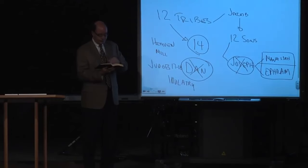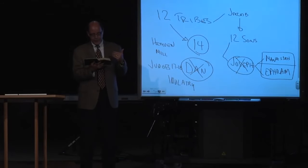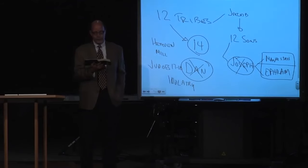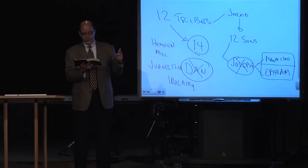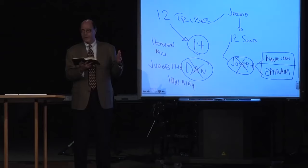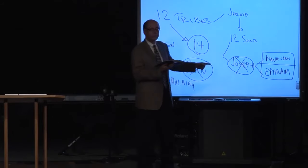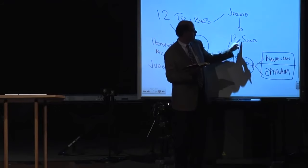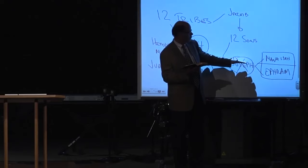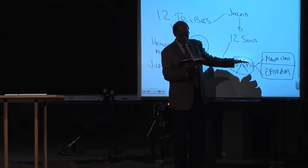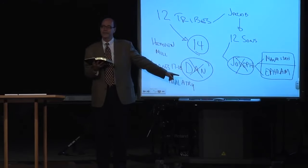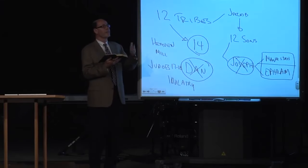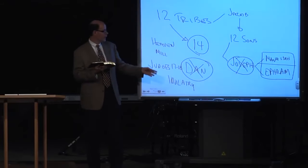It says here are the 12 tribes, and you notice that in the 12 tribe list of the 144,000, verse 5 says here are the 12 tribes: Judah, Reuben, verse 6, Gad, Asher, Naphtali, Manasseh. Manasseh is not one of the 12. Manasseh is a grandson, not a son of Jacob. The sons of Jacob were the 12. Joseph is there if you notice in verse 8. But who's missing in the 144,000? The apostate.